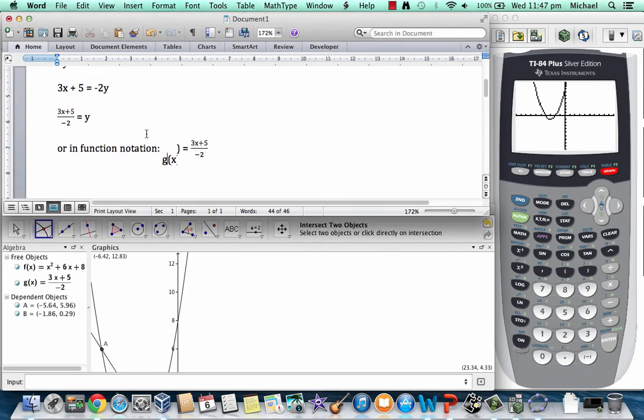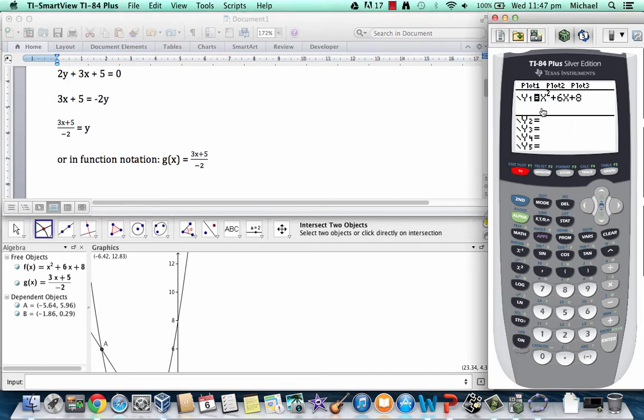And then for the second one again we have to rearrange the formula so that it can be in the y equals form for our graphing calculator. So we'll click down and we'll write three x plus five in brackets again because otherwise we might get an error with order of operations. 3x plus five divided by negative two.